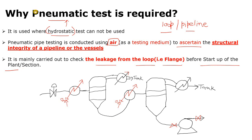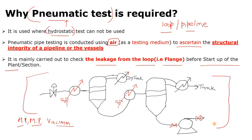Suppose your plant is shut down and going to start up — so before startup we will do the pneumatic test. There are different sections in your plant, like a high pressure section, medium pressure section, and vacuum section. It will depend on each section whether you have to do the hydrostatic test or the pneumatic test. But before startup we will check whether there is any leakage or structural integrity issue in those loops or vessels.